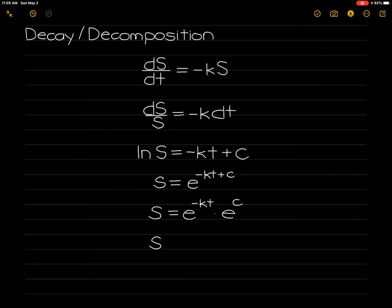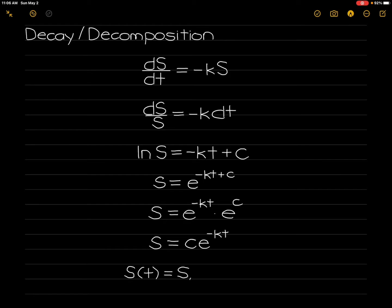This can be simplified as s is equal to c times e raised to negative k times t. We can denote this as a function of time: s of t is equal to the initial amount s-naught times e raised to negative k times t.